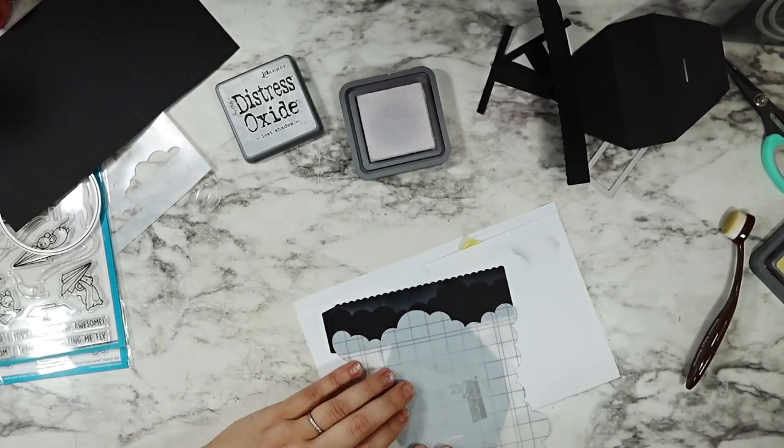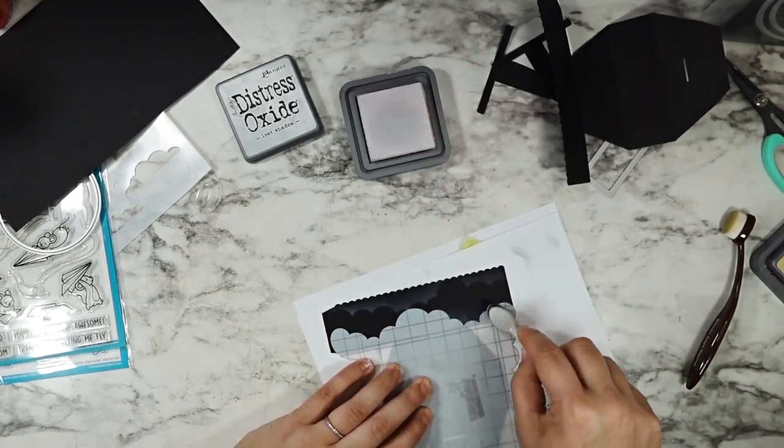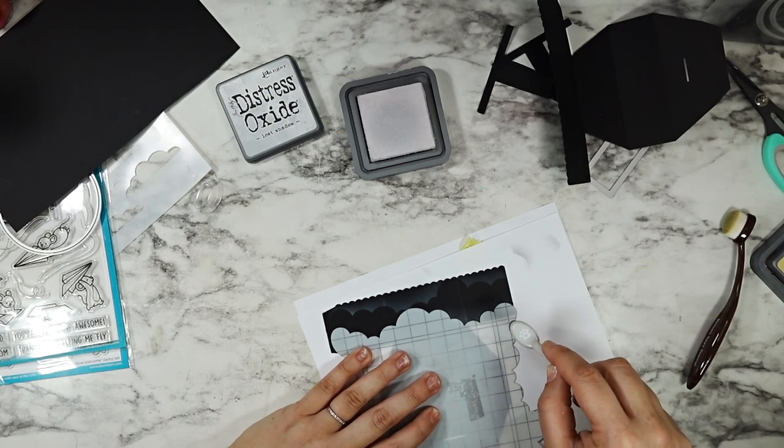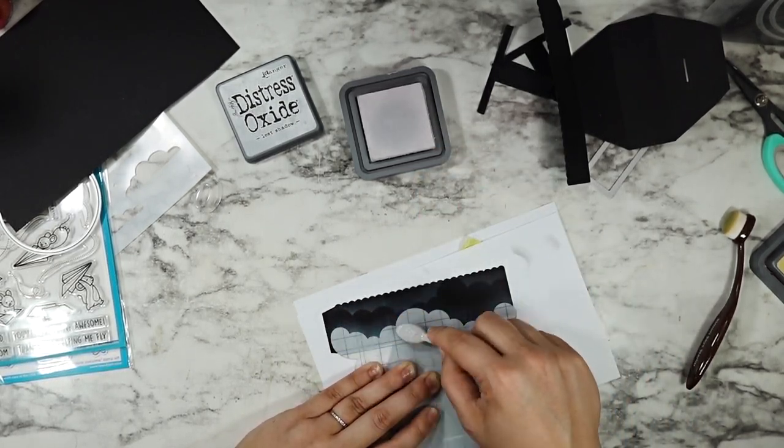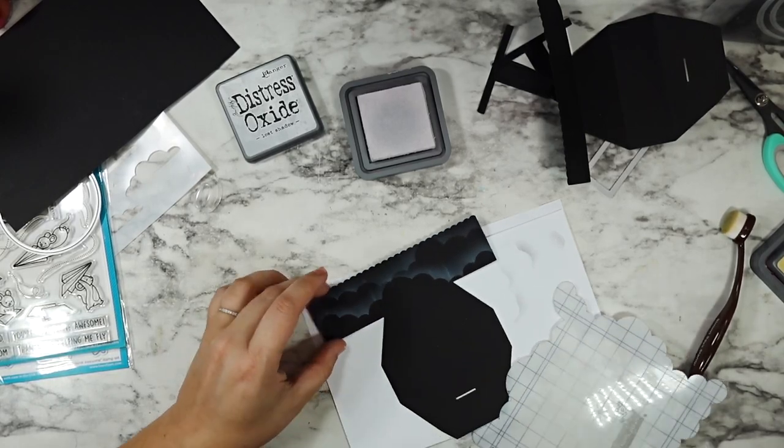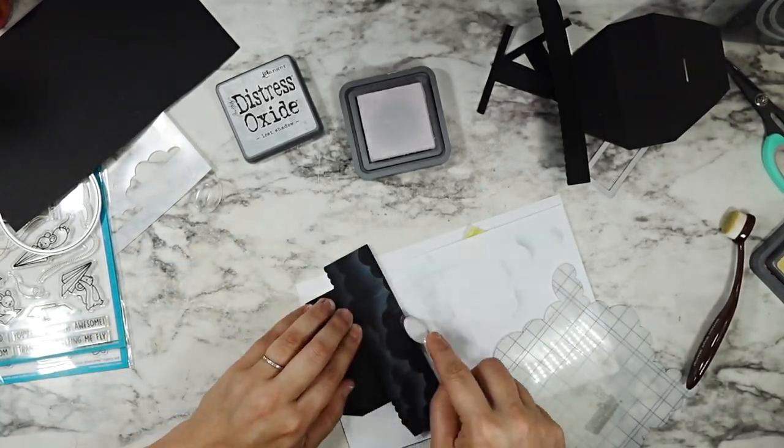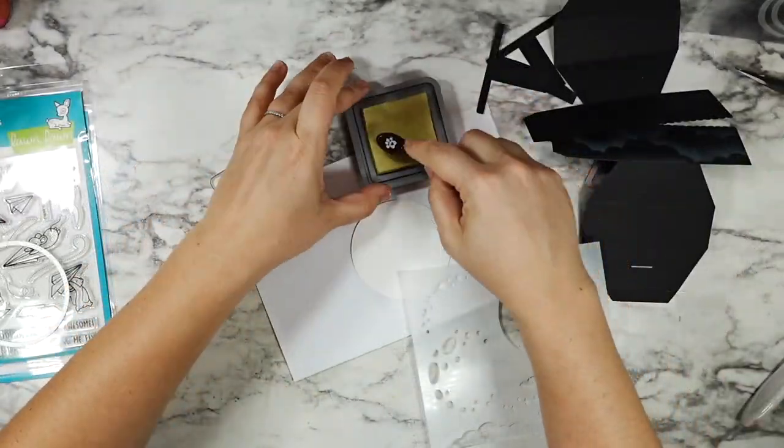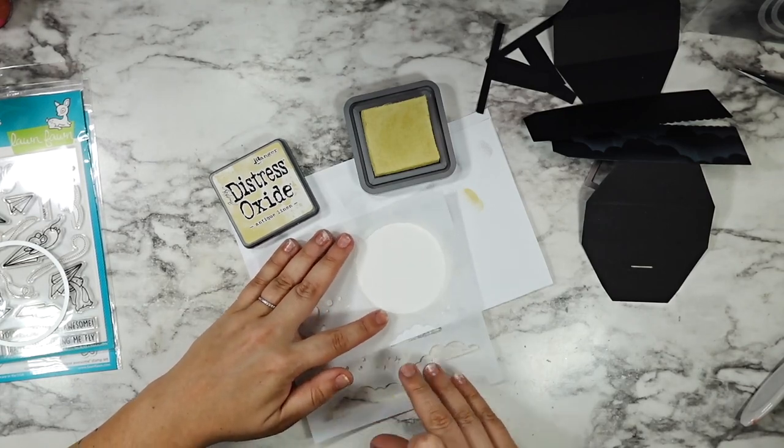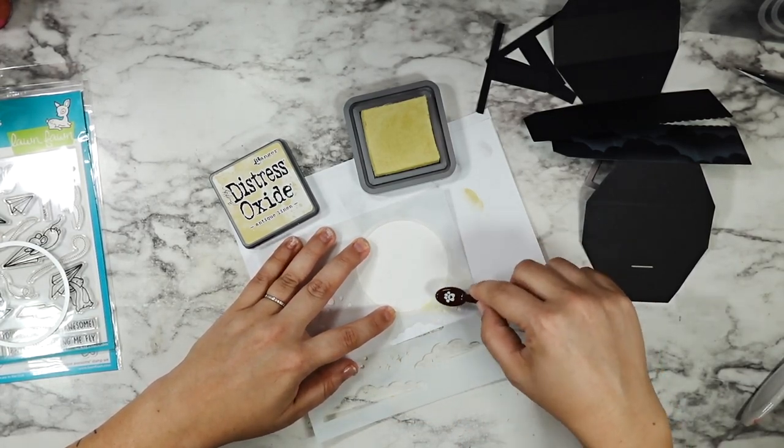And I did this to both sides. The one that I liked more became the front panel and the one that I liked least became the back. This one was the back just because I didn't like how that larger cloud hit that top layer, but honestly whatever makes you happy. I just love how this oxide shows up against that black cardstock.